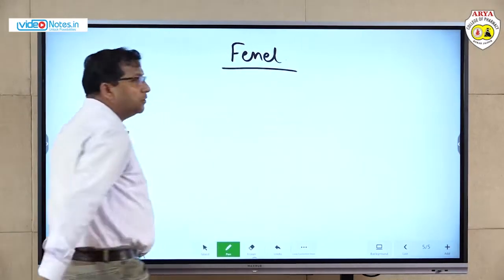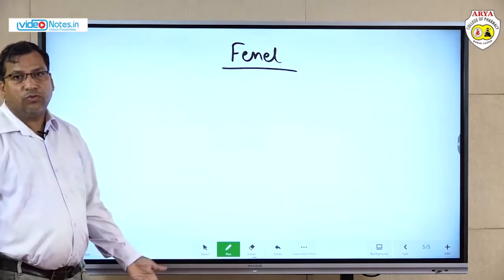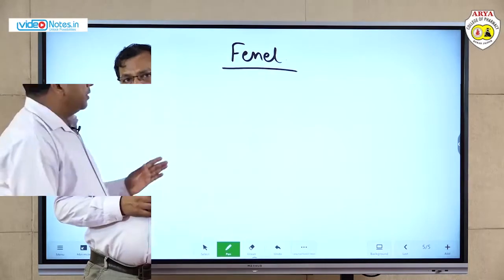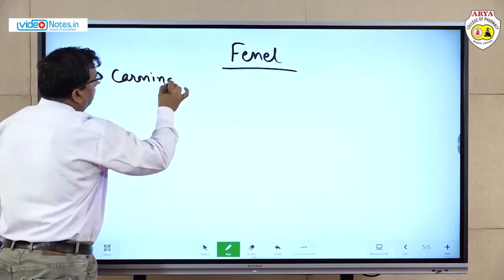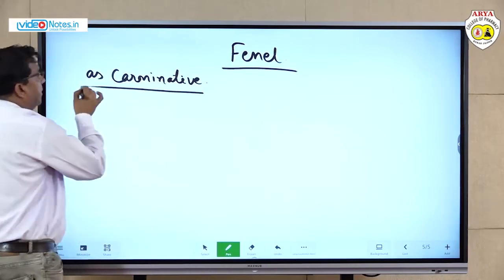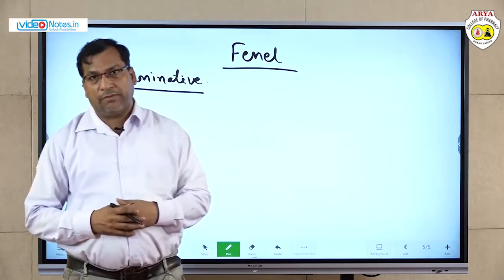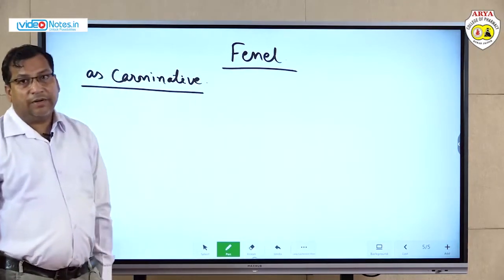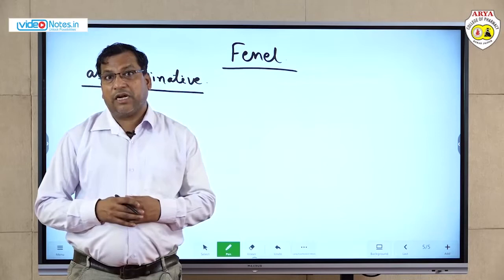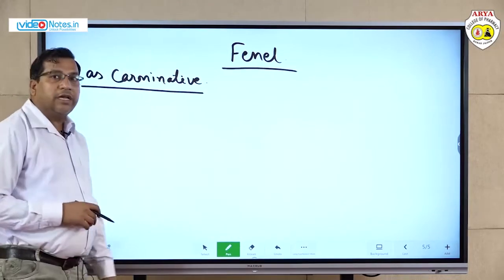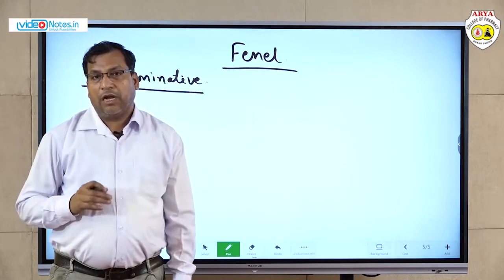Now we will discuss about fennel, meaning sauf. Fennel is part of spices and acts as a carminative. After eating, many people use fennel because it contains fenchone volatile oil that reduces, expels, or neutralizes the extra gases formed during digestion in the gastrointestinal tract. Therefore, fennel is widely used as a carminative after lunch or dinner.